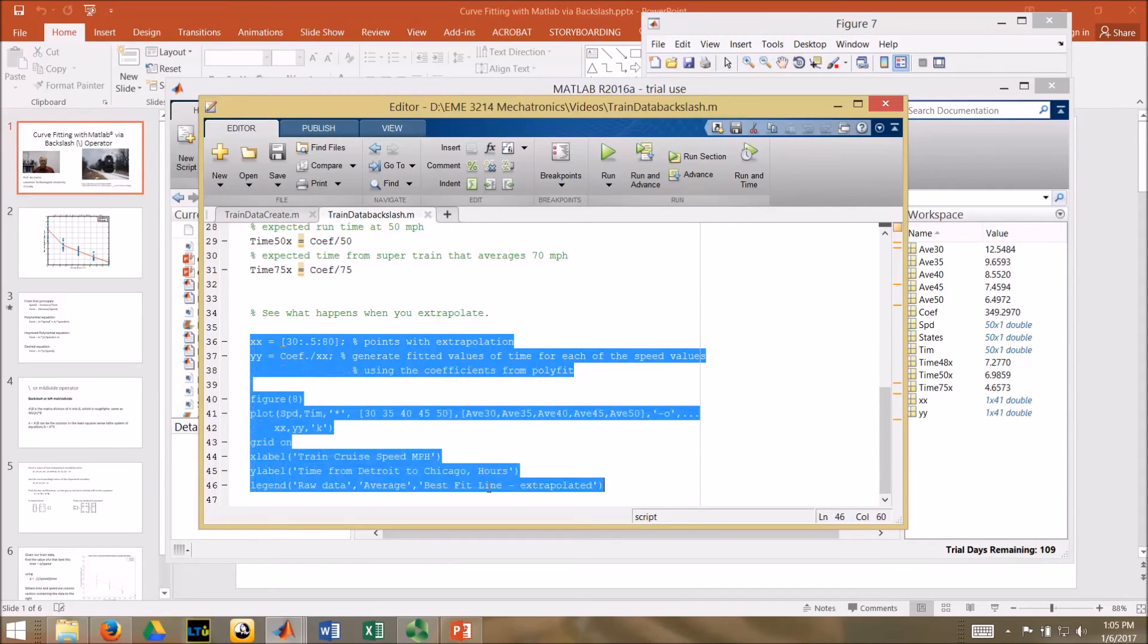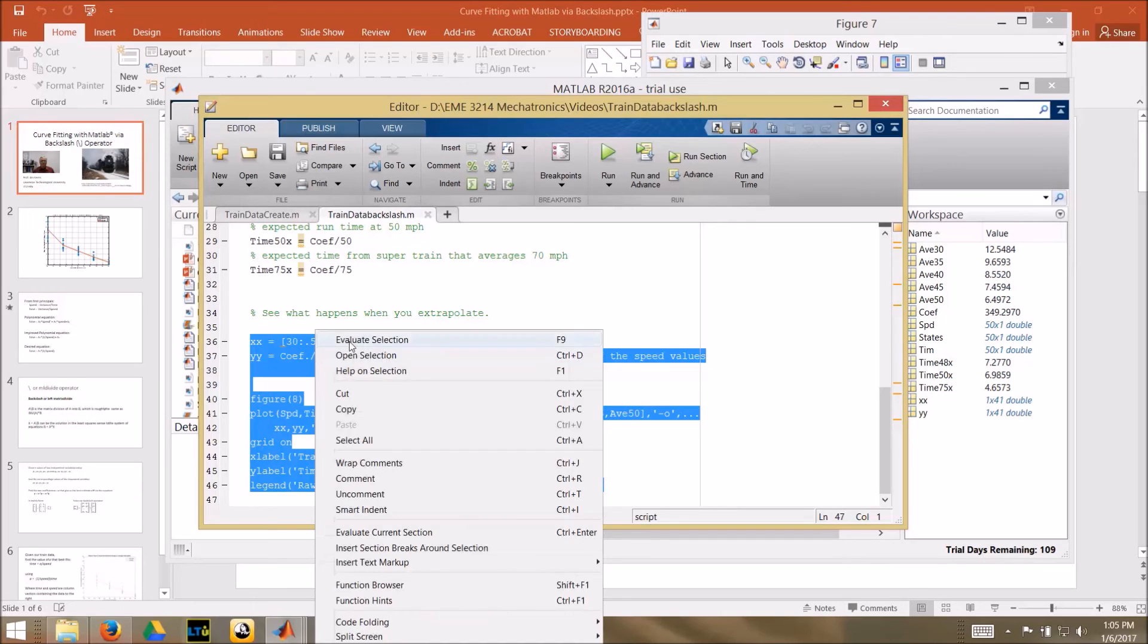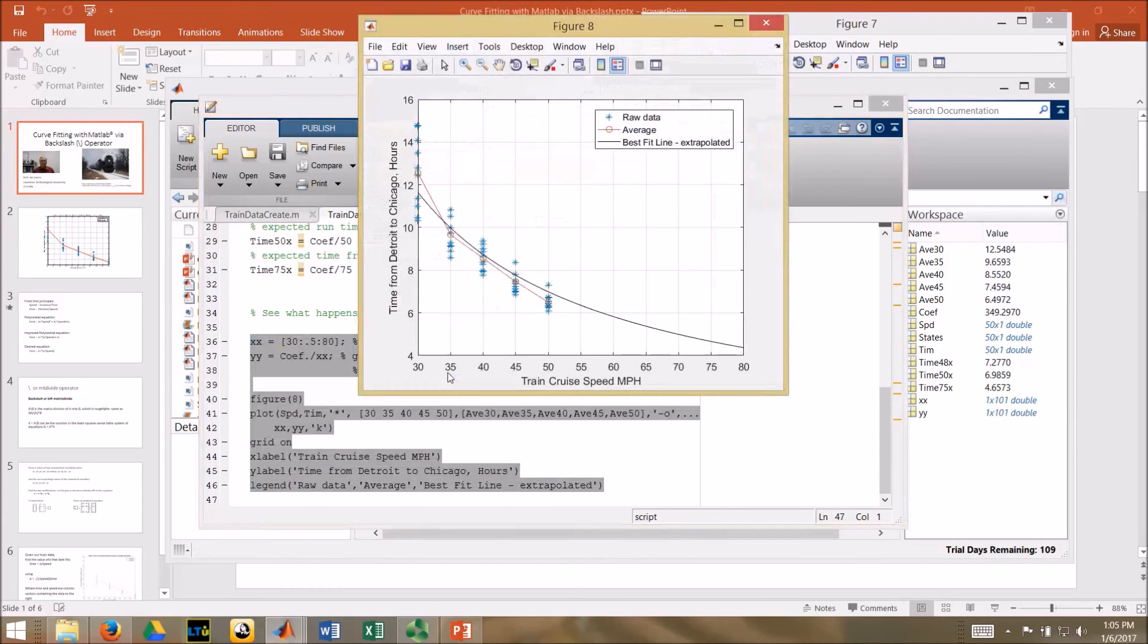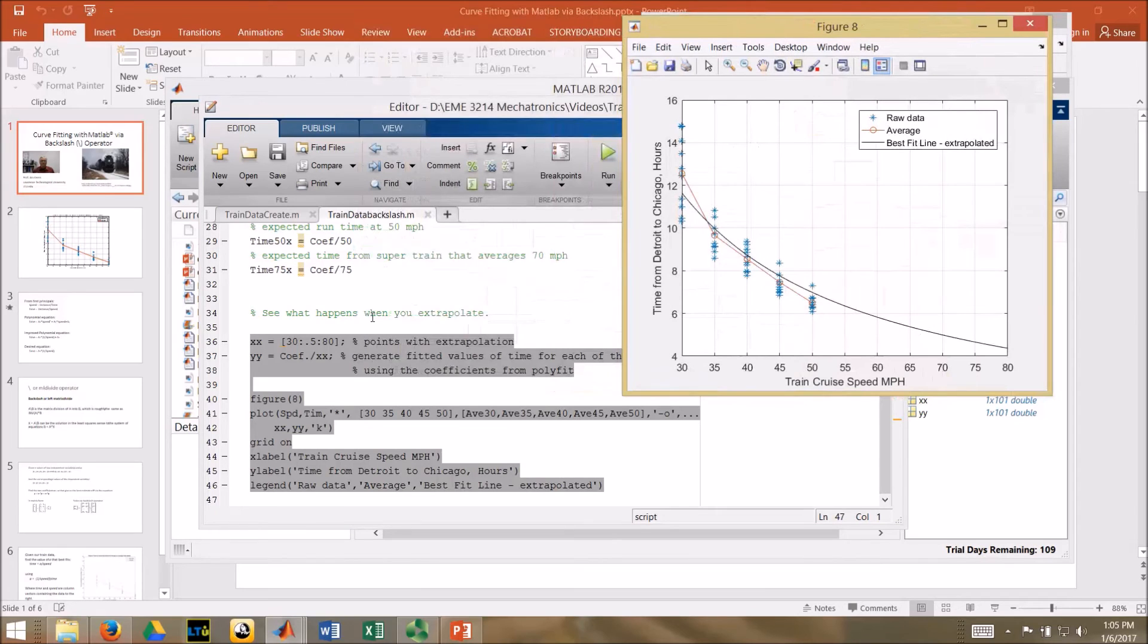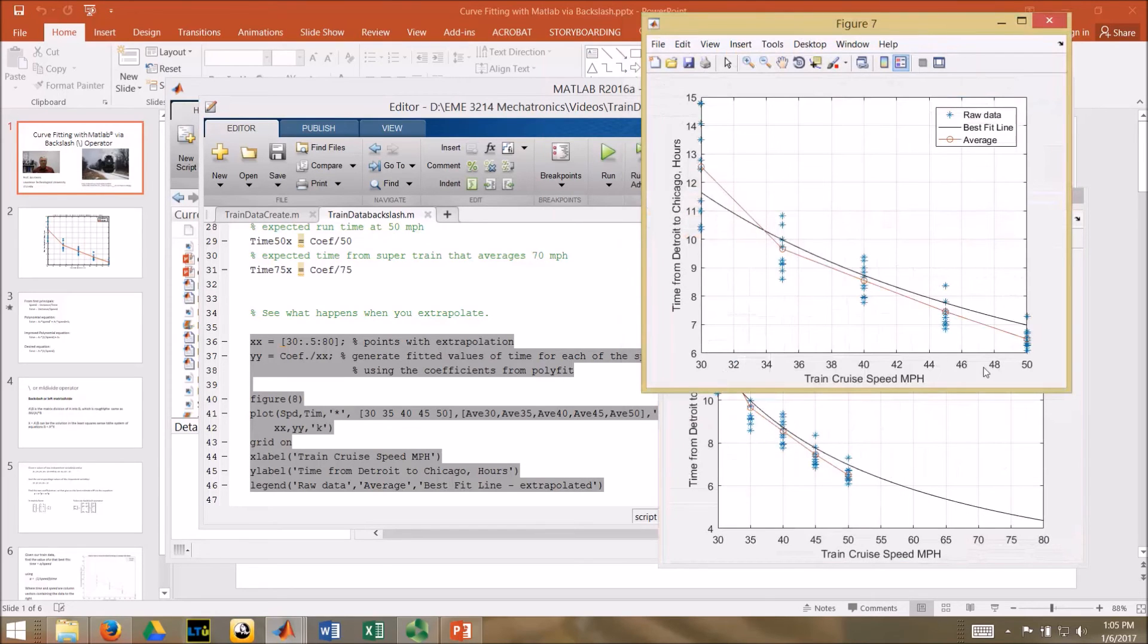I can draw the expected values from 30 to 80 instead of just 30 to 50 to see what it looks like when we extrapolate. That's not too bad. Again it's a decent fit. That's extrapolated, this is not extrapolated.